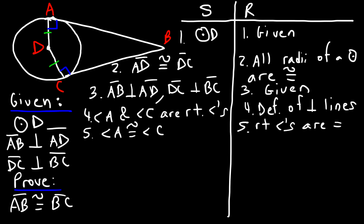In step six, we could say that BD is congruent to itself, and this is due to the reflexive property. Now we have enough information to prove that the two triangles are congruent, and we can use the hypotenuse leg theorem because we have two right triangles.